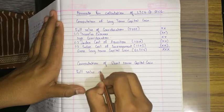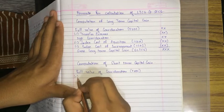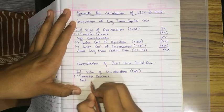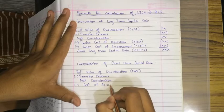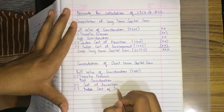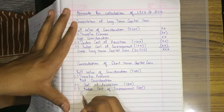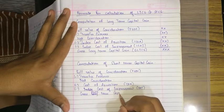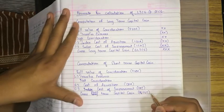For Short Term Capital Gain: Full Value of Consideration (FVOC) less Transfer Expenses gives Net Consideration, less Cost of Acquisition (COA), less Cost of Improvement (COI) — note: no indexation here — gives you Gross Short Term Capital Gain (GSTCG).